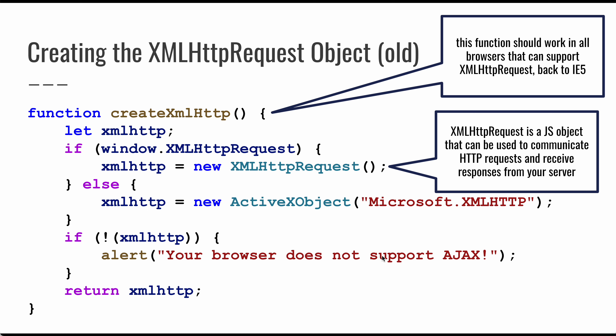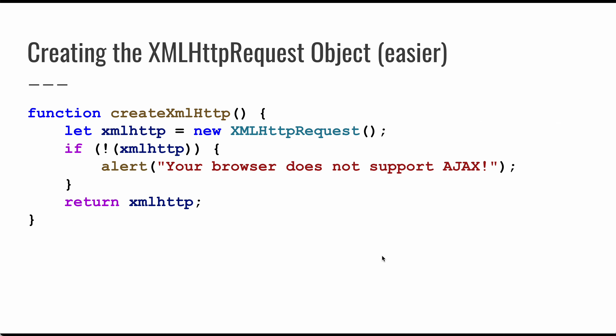Nowadays it's simpler — you can just do `new XMLHttpRequest()` because pretty much every browser created in the last 10 years supports this. We're going to abstract this into a function so we can change how we build it. We'll try to build the object, and if we can't create it, it will be null and we'll alert the user that the browser doesn't support Ajax.